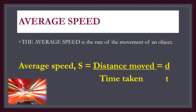Average speed is the rate of movement of an object. It is measured by the equation: distance over time taken. Distance is denoted as d, time taken as T, and average speed as S.